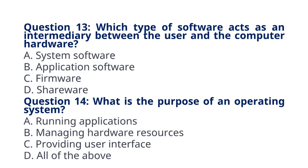Question 14: What is the purpose of an operating system? A. Running applications, B. Managing hardware resources, C. Providing user interface, D. All of the above. The correct answer to question 14 is option D: All of the above. Explanation: An operating system manages hardware resources, provides a user interface, and facilitates the execution of applications.